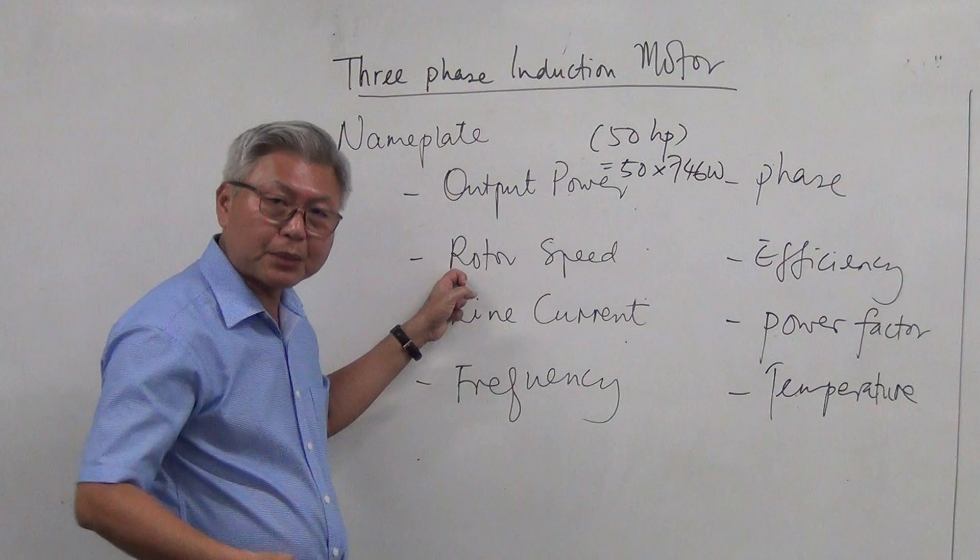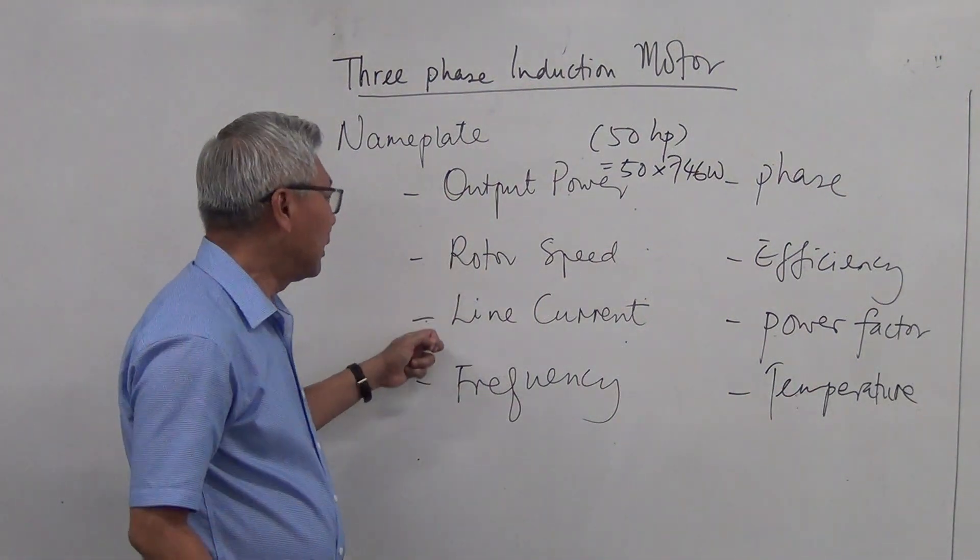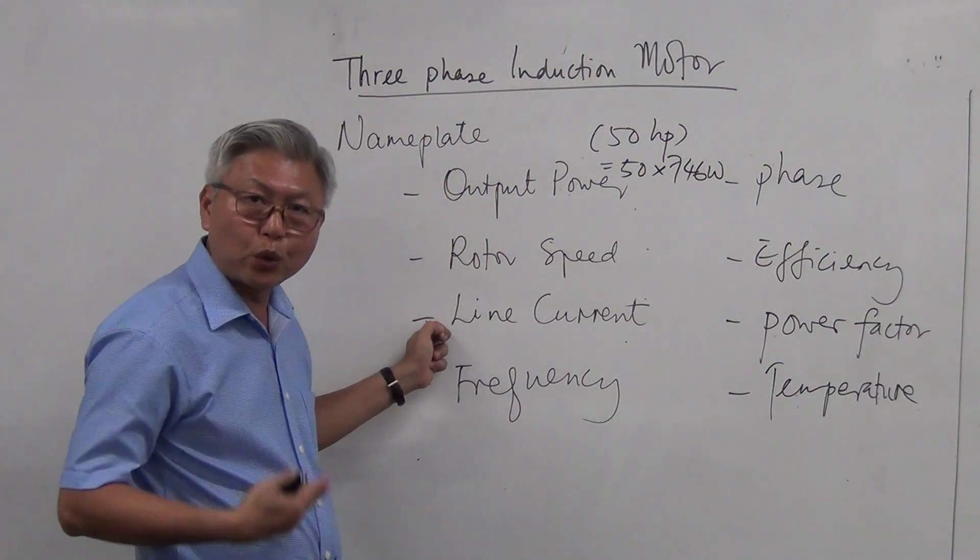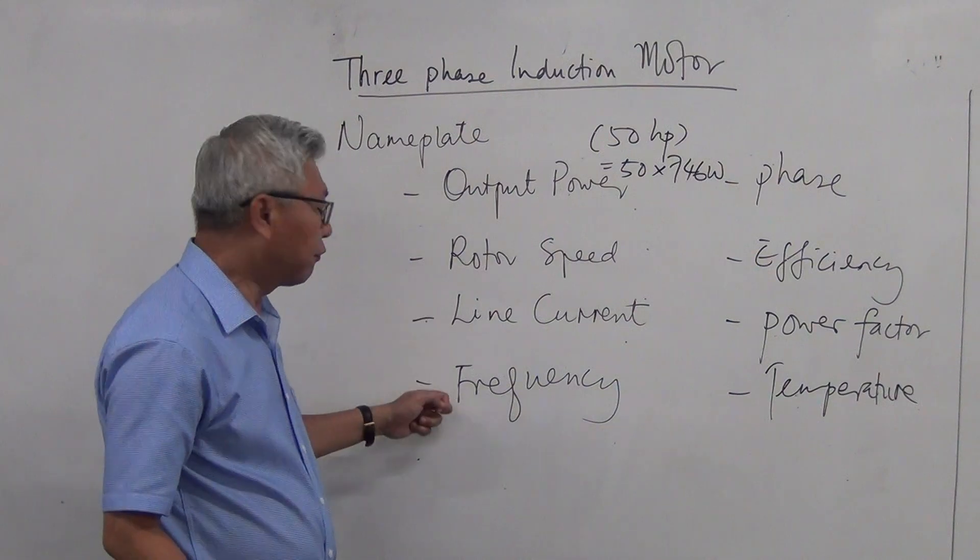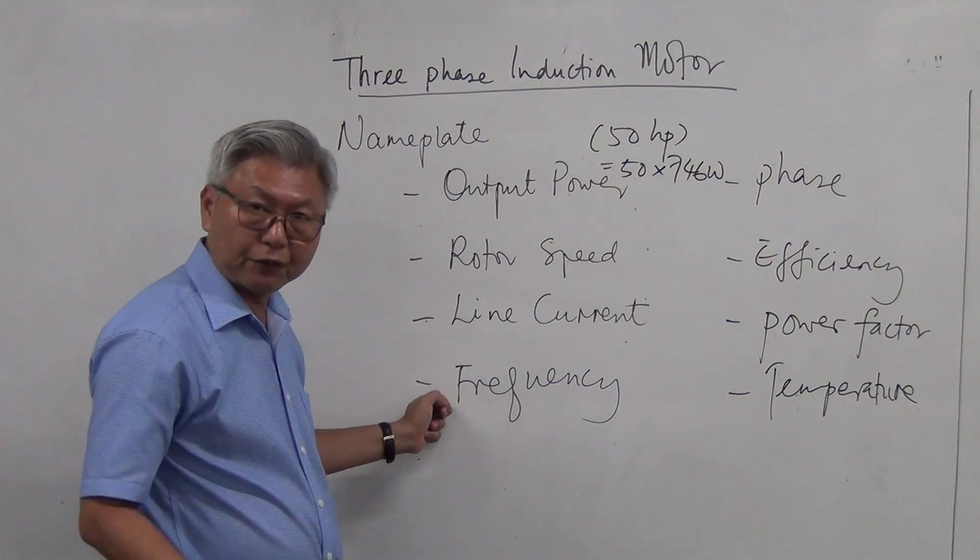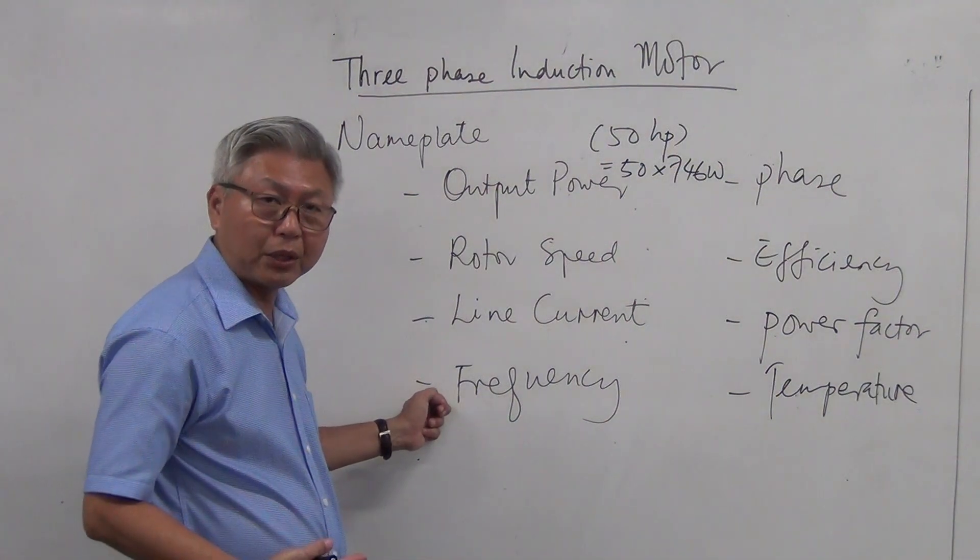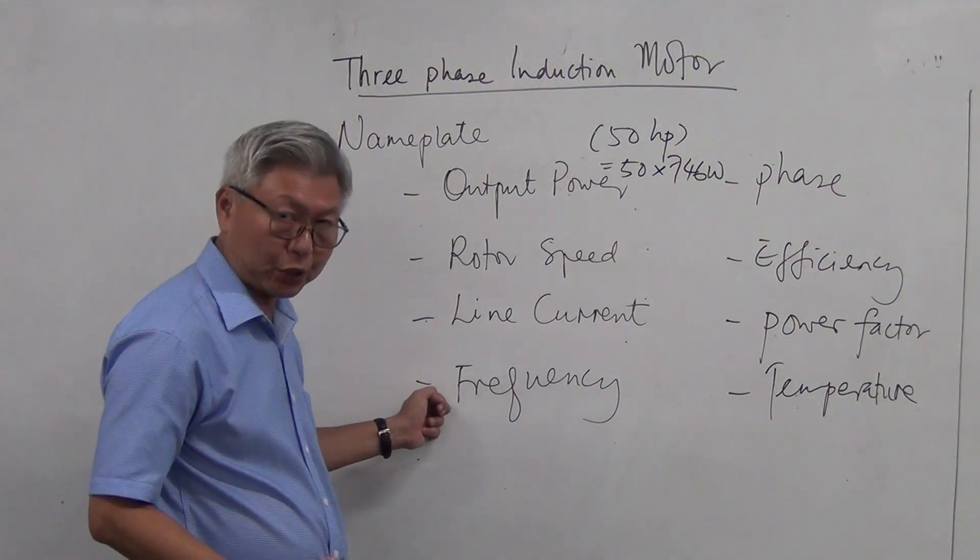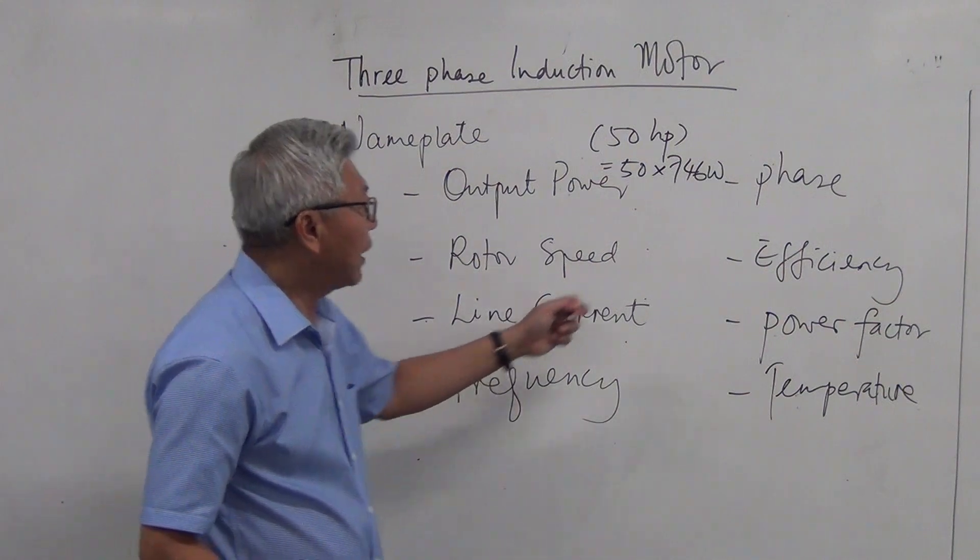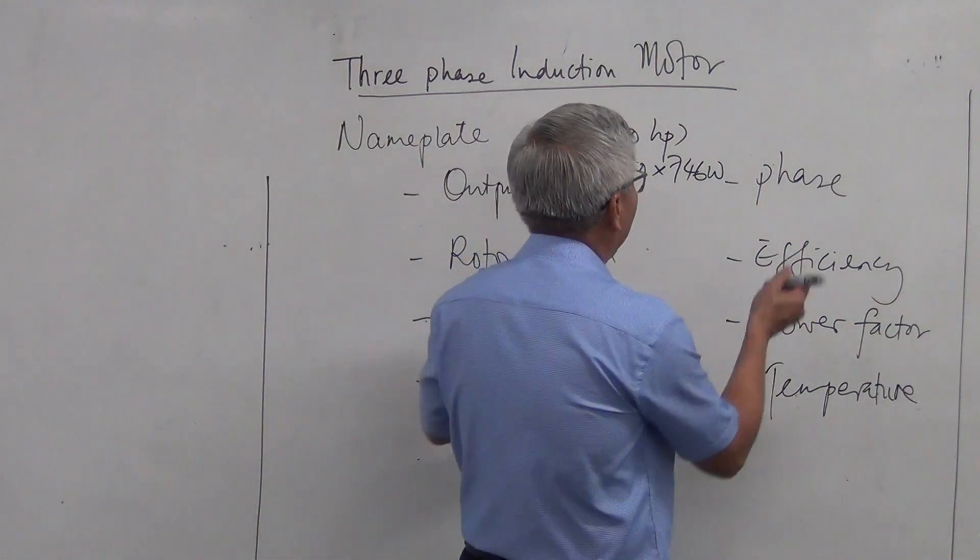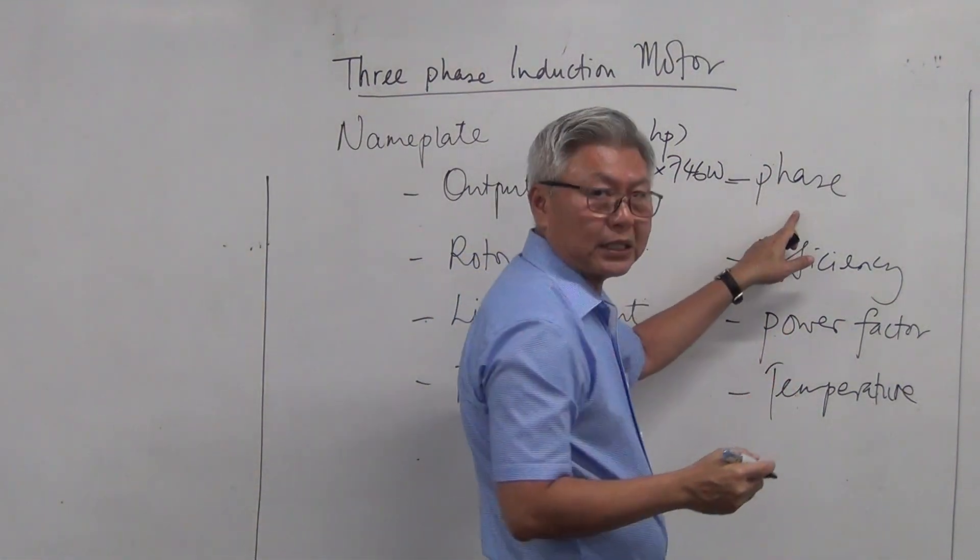Rotor speed, the maximum speed that a motor can run. Line current, the maximum current that can go into the motor. The frequency, for example in Singapore is 50 hertz. But this is an AC motor, so it works with AC power. It must be able to work with certain frequency. And phase, when it's a three-phase power supply, normally it's three-phase.